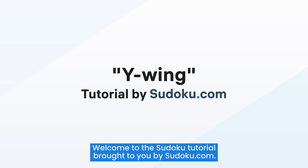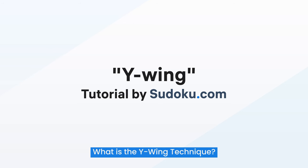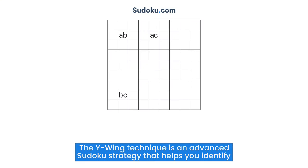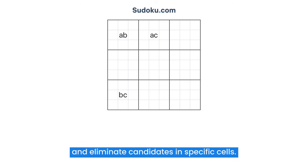Welcome to the Sudoku tutorial brought to you by sudoku.com. What is the Y-Wing Technique? The Y-Wing Technique is an advanced Sudoku strategy that helps you identify and eliminate candidates in specific cells.